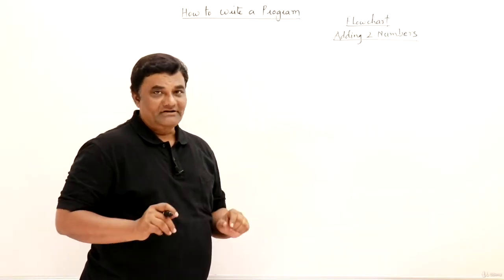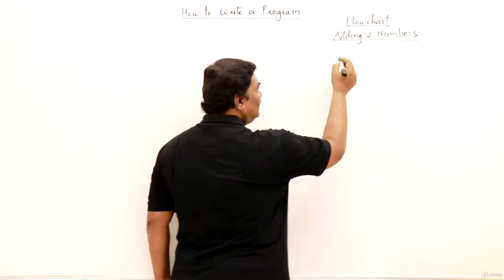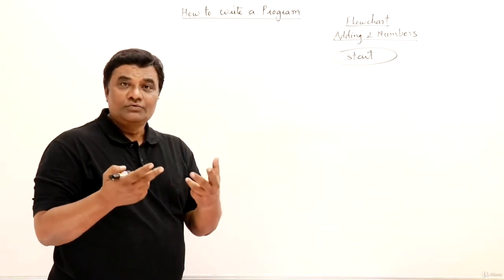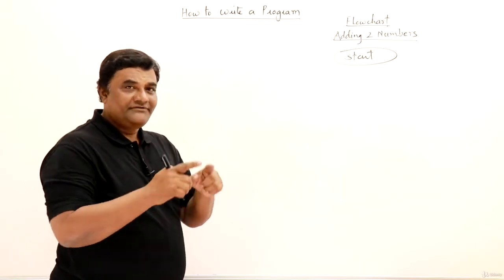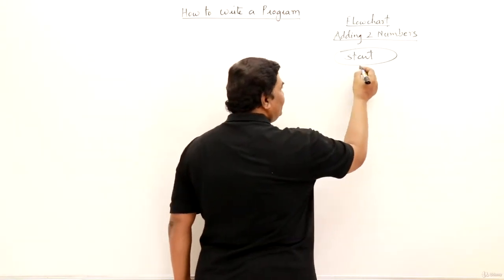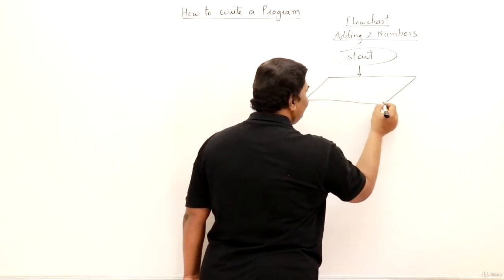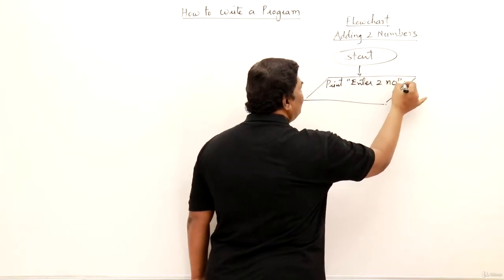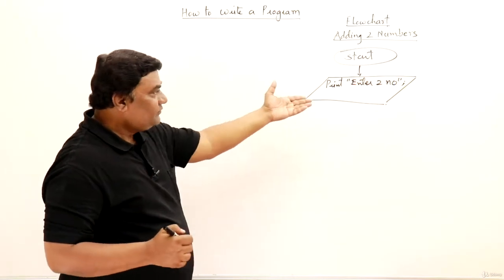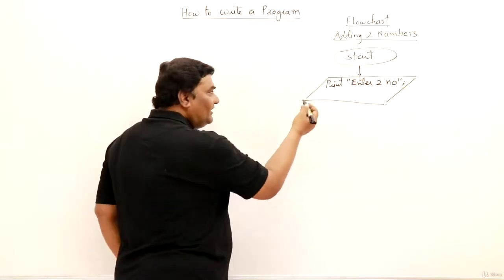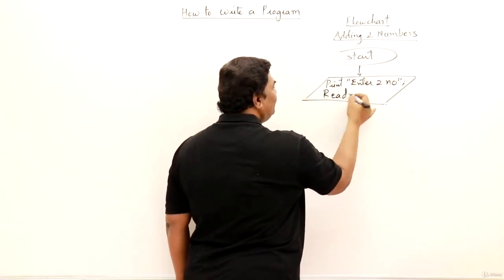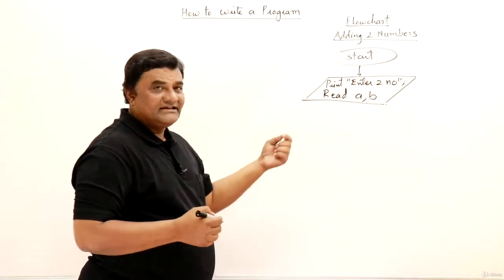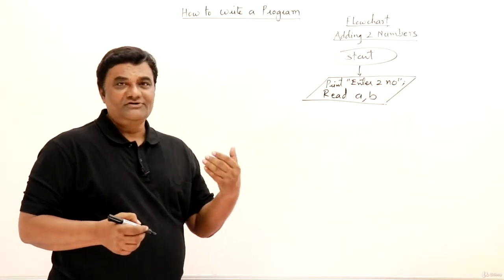Let us draw a flowchart for adding two numbers. The starting point of a flowchart is 'Start'. Then our program should take two numbers as input. For input and output, we use a parallelogram. The next thing is to take input — it is better to give a message. So printing a message: 'Enter two numbers.' I have told you that first I should take two numbers from you. Then I should read two numbers — I am a program — I will read these numbers and give names to them. These are called variables. I will take them in A and B. Now the first number is in A, and the second number is in B.